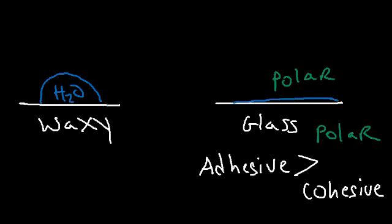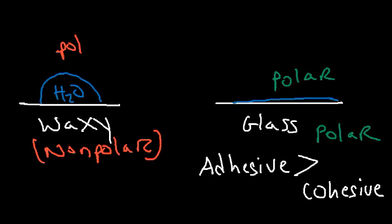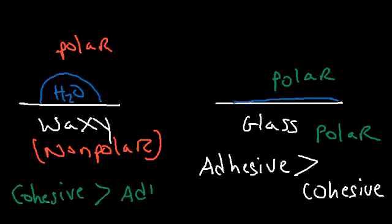On a waxy surface — a surface coated with a lubricant, for example — most waxes are nonpolar, and so they don't mix well with water. Water is polar, and when you have a polar substance and a nonpolar substance, they don't mix. So the adhesive forces are very low. Because the cohesive forces — the forces between water molecules — exceed the adhesive forces, water is going to form a bead and a spherical shape. This tendency to minimize the surface area, or the contact area between water and the waxy surface, is called surface tension.